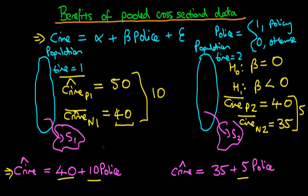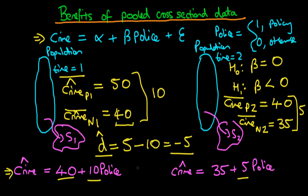This difference in gaps can be used to calculate the effect of this policing policy on crime rates. We take the gap at time period 2 and subtract the gap at time period 1, getting a value of minus 5. So this differences-in-differences estimator has found that the effect of policing is to lower the crime rate by 5 units. Even without formally introducing a pooled cross-sectional model, this variation across time has allowed us to estimate the effect of this policy — which would have been completely impossible with a sample from just one point in time.